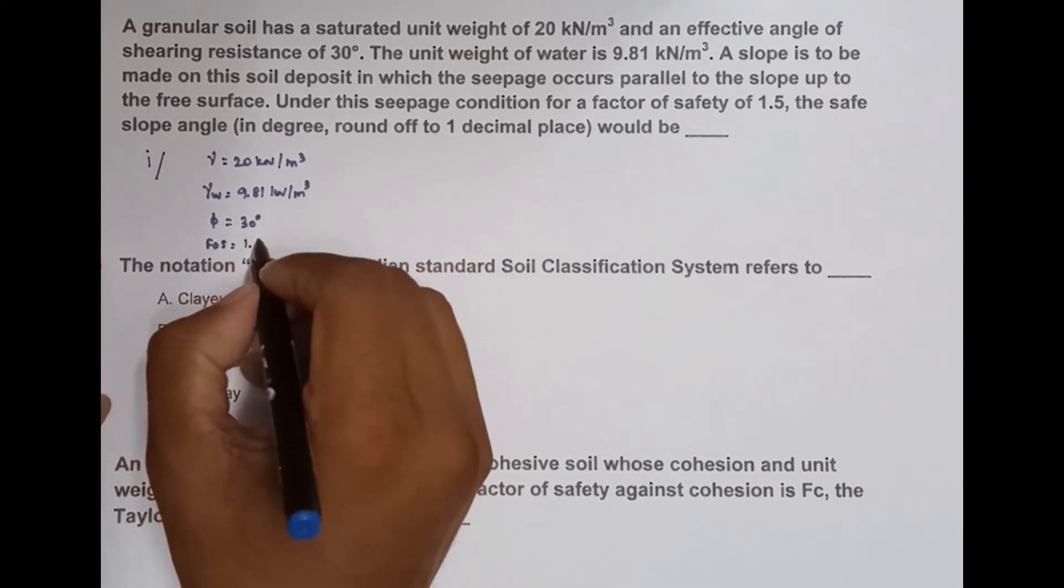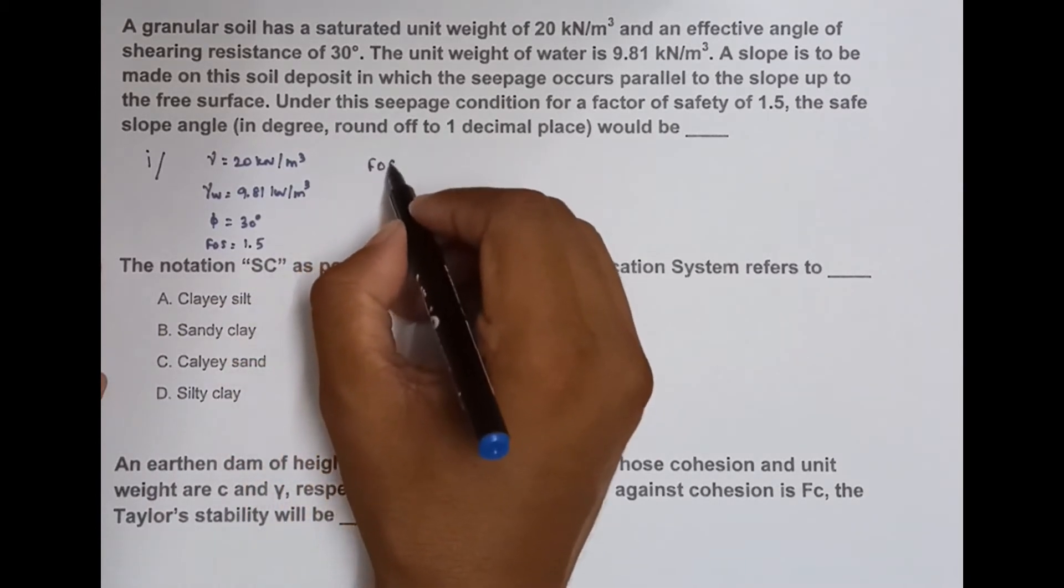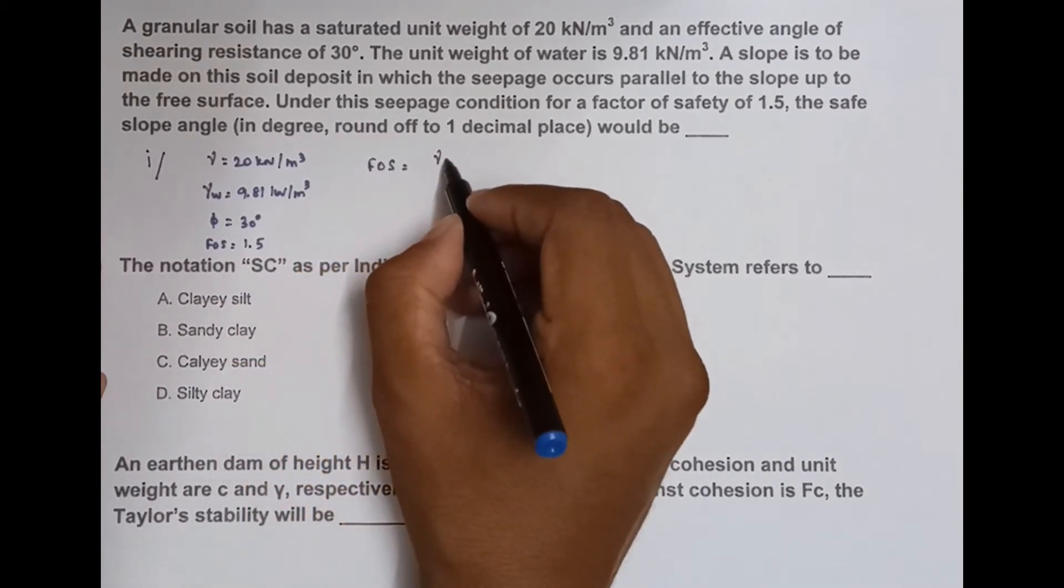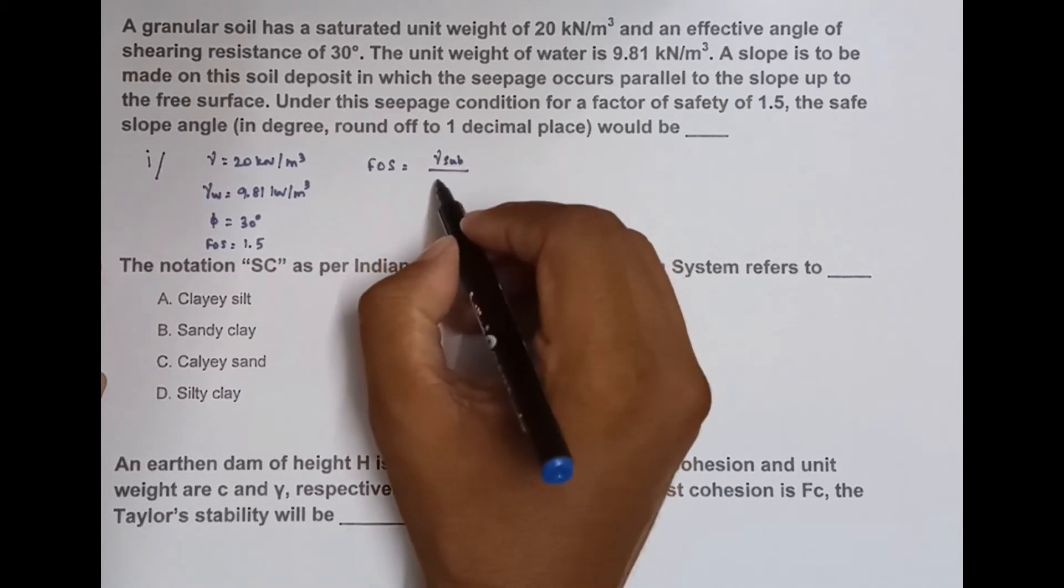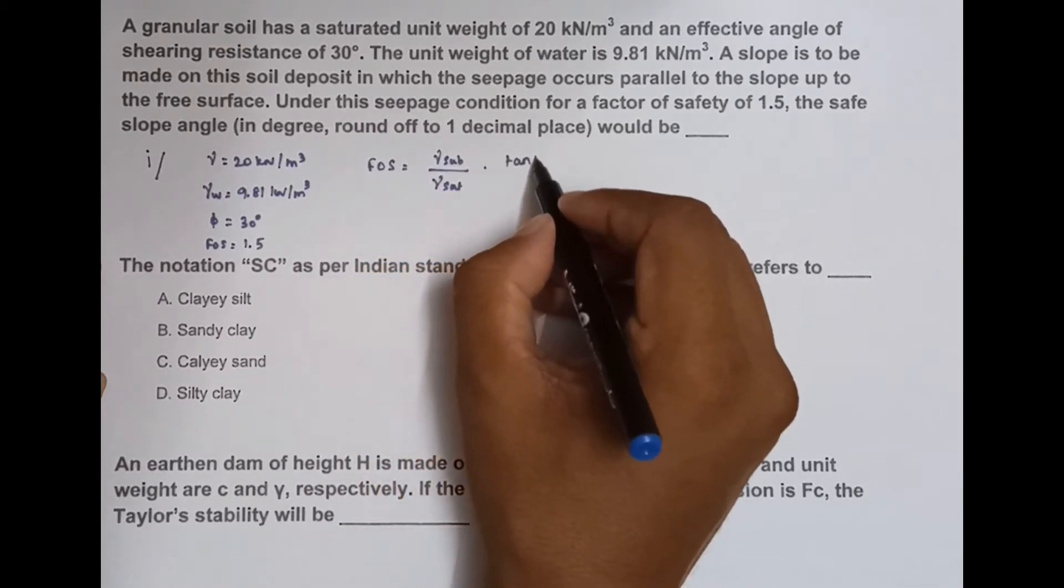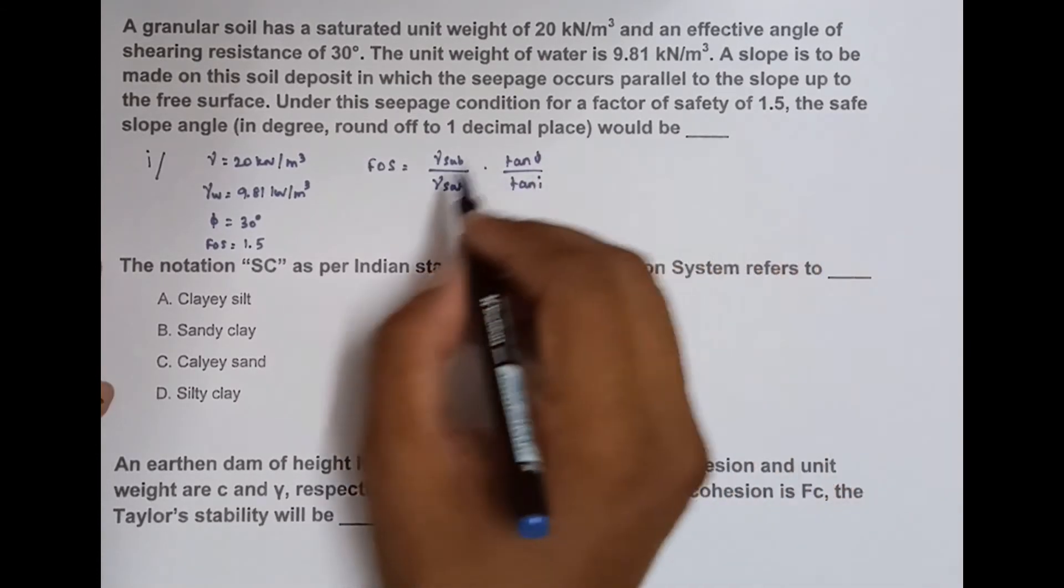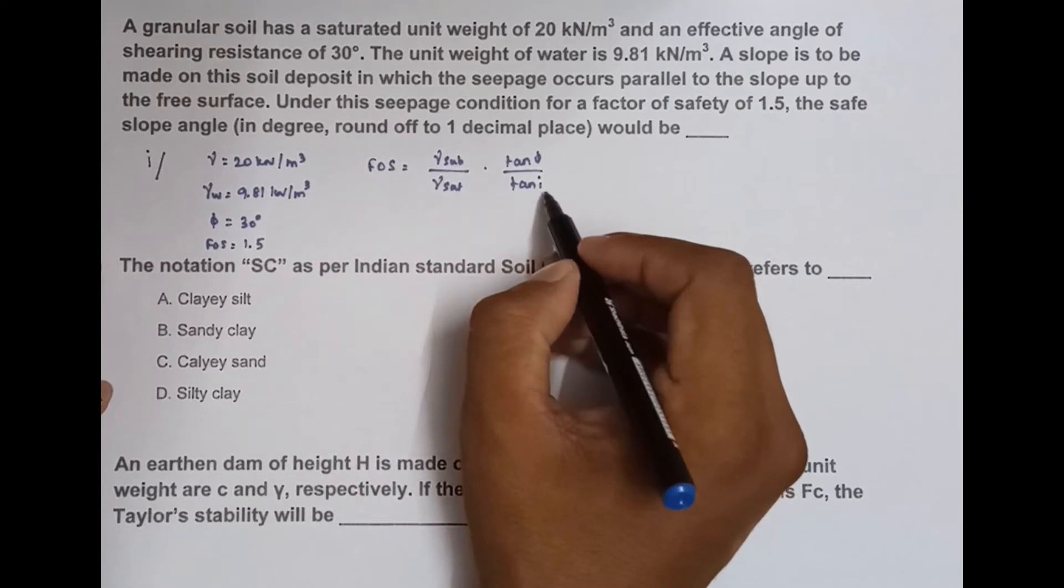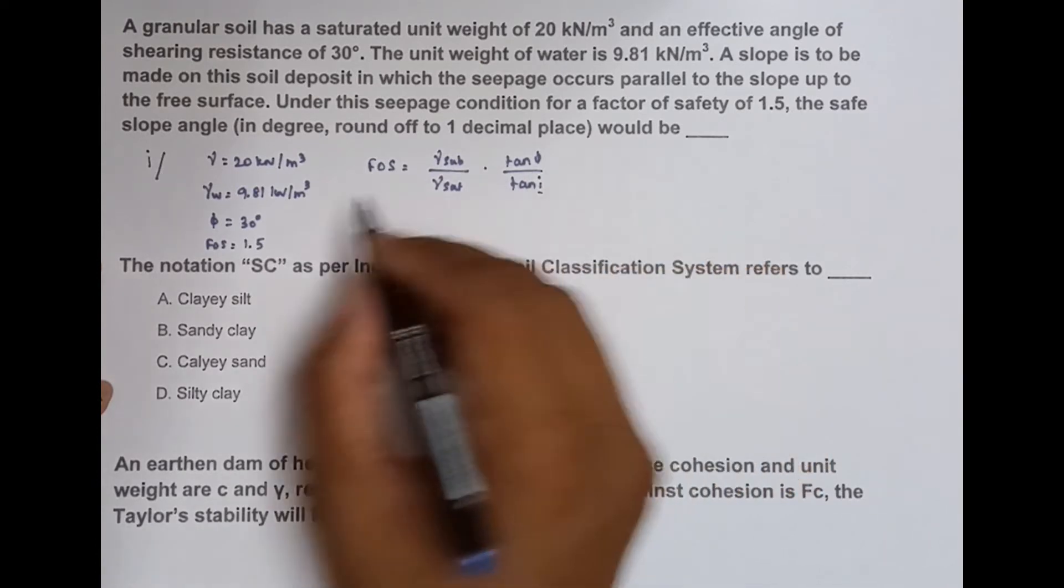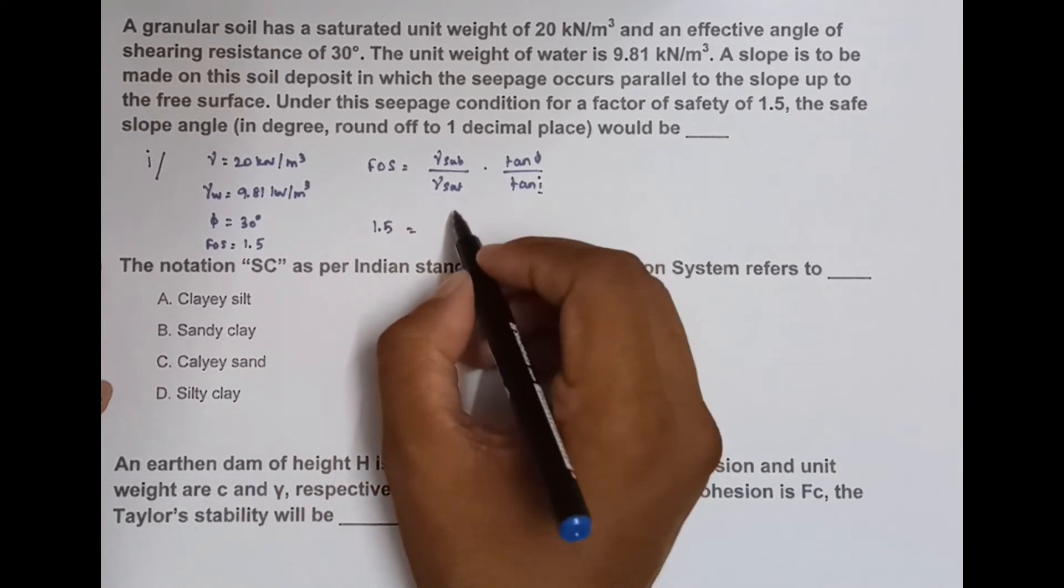Now find out the formula: FOS = (γ_submerged / γ_saturation) × (tan φ / tan i). This is the formula. We know all those things; we need to know only the i value. So FOS is 1.5 equals...